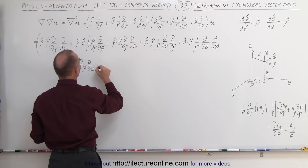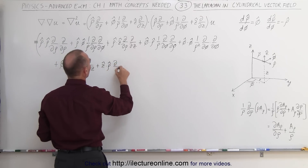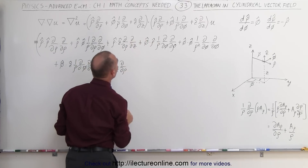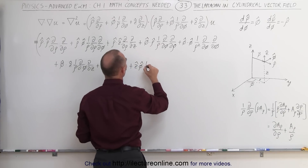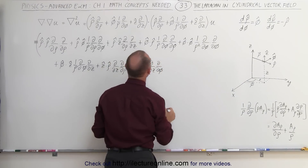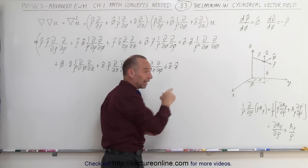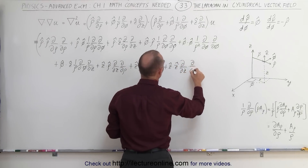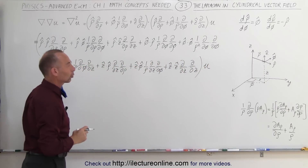Taking the third del operator term: plus the z unit vector dotted with the ρ unit vector, times the partial with respect to z, times the partial with respect to ρ; plus the z unit vector dotted with the φ unit vector, times one over ρ, times the partial with respect to z, times the partial with respect to φ; and finally, plus the z unit vector dotted with the z unit vector — equal to one — times the partial with respect to z, times the partial with respect to z, all operating on scalar quantity u.